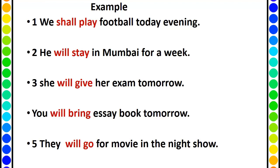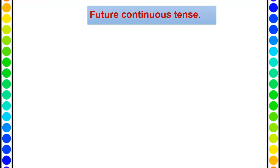She will give her exam tomorrow. You will bring an essay book tomorrow. They will go for a movie in the night show. To identify future tense is very simple — with 'will' or 'shall' you have the base form of the verb.